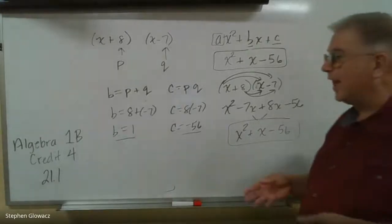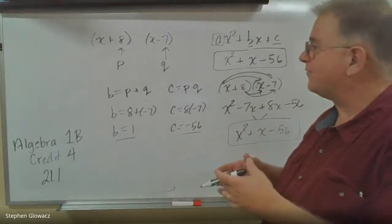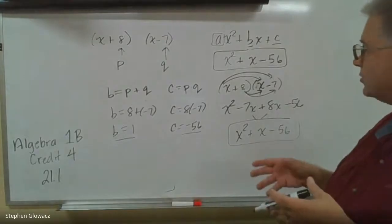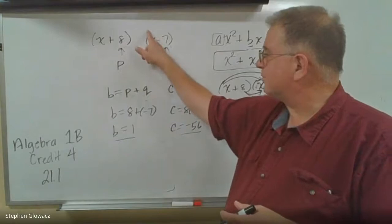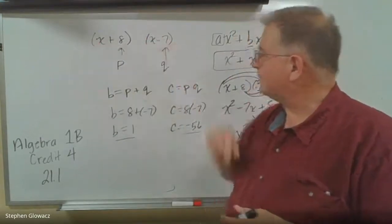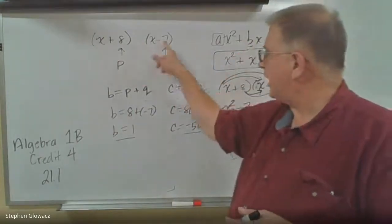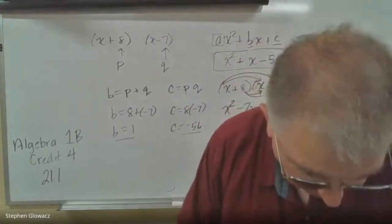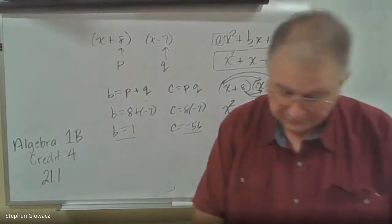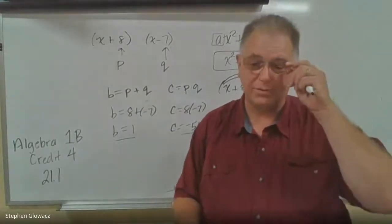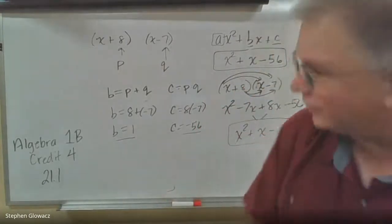This is a preview and setup for how factoring works. It also gives you a shortcut for multiplying — when you have just one x in each factor, you can add the two numbers to get the coefficient of x, and multiply them to get the constant term c. There's nothing to do on page 11, but there are examples to read. Now we're going to get into factoring.